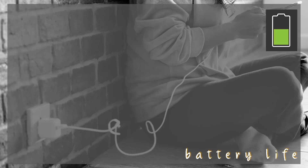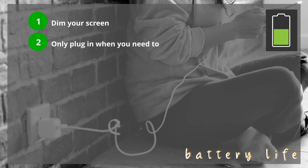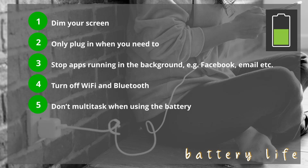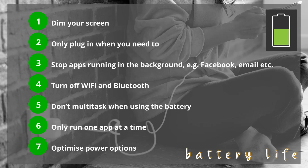Here are some tips for you to survive. Dim your screen. Only plug it in when you need it. Stop running apps in the background — for example, Facebook, email and Instagram. Turn off your Wi-Fi and Bluetooth. Don't multitask when using the battery. Only run one app at a time. Optimize power options always. And that is how you survive UCT!